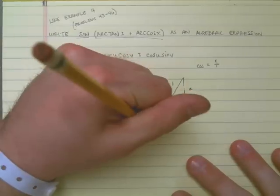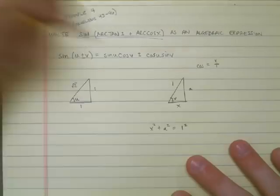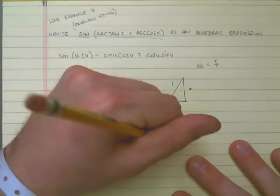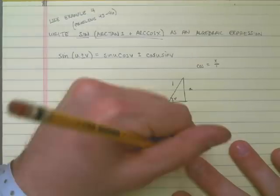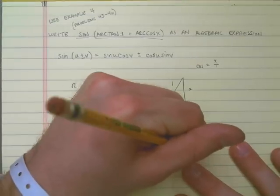I know that x squared plus a squared is equal to 1 squared. That means that a squared must be equal to 1 minus x squared. So a must be the square root of 1 minus x squared.